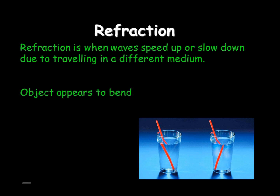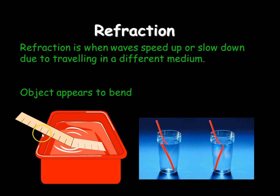The first way light can bend is called refraction. Refraction is when waves speed up or slow down due to traveling in a different medium — in other words, they bend. For example, if you put a ruler into a container of water it looks like the ruler is bent, but it's not. The light is just hitting your eye at a slightly different angle. Here you have two glasses of water with a straw, and the straw appears to bend — it looks disjointed.